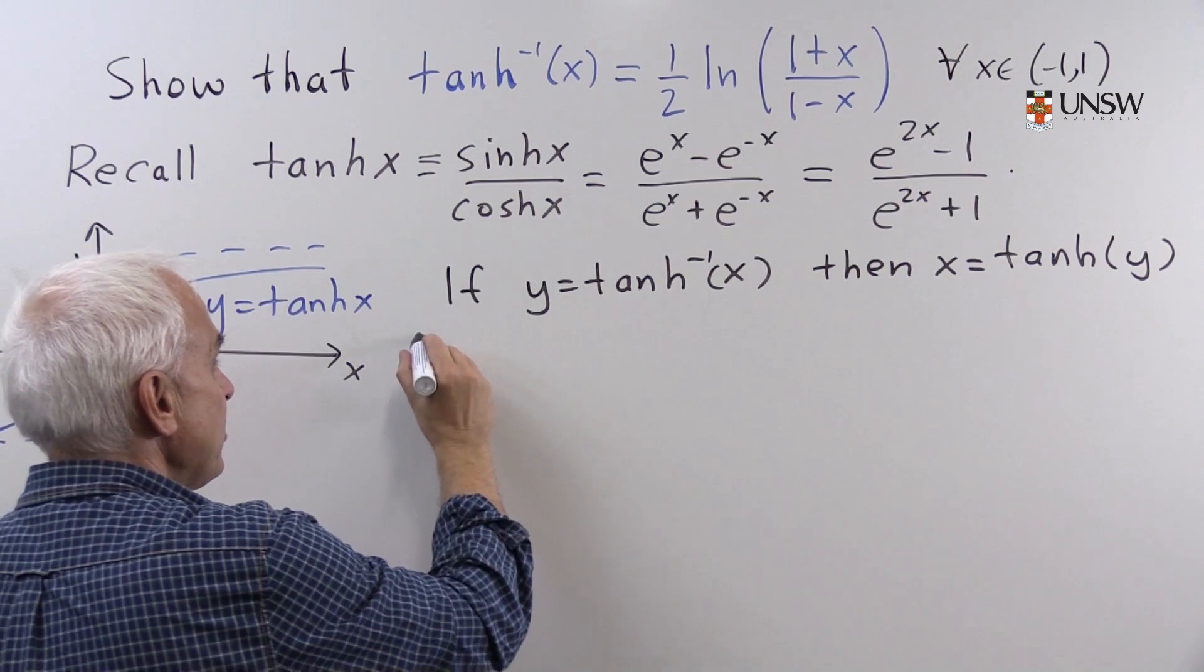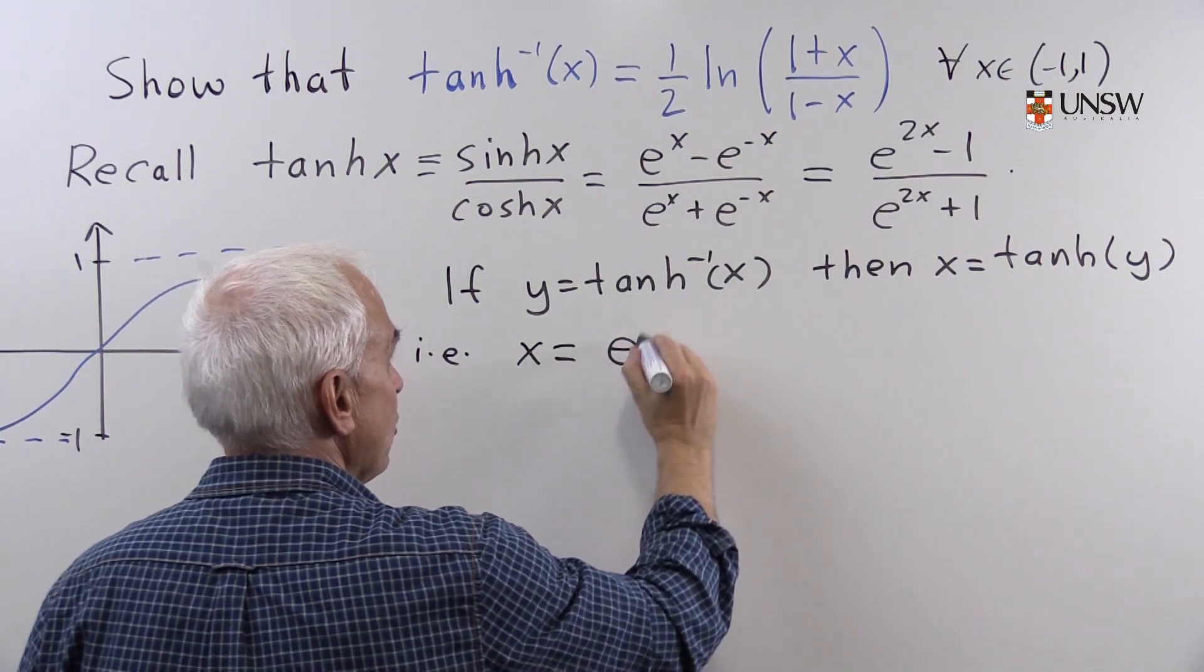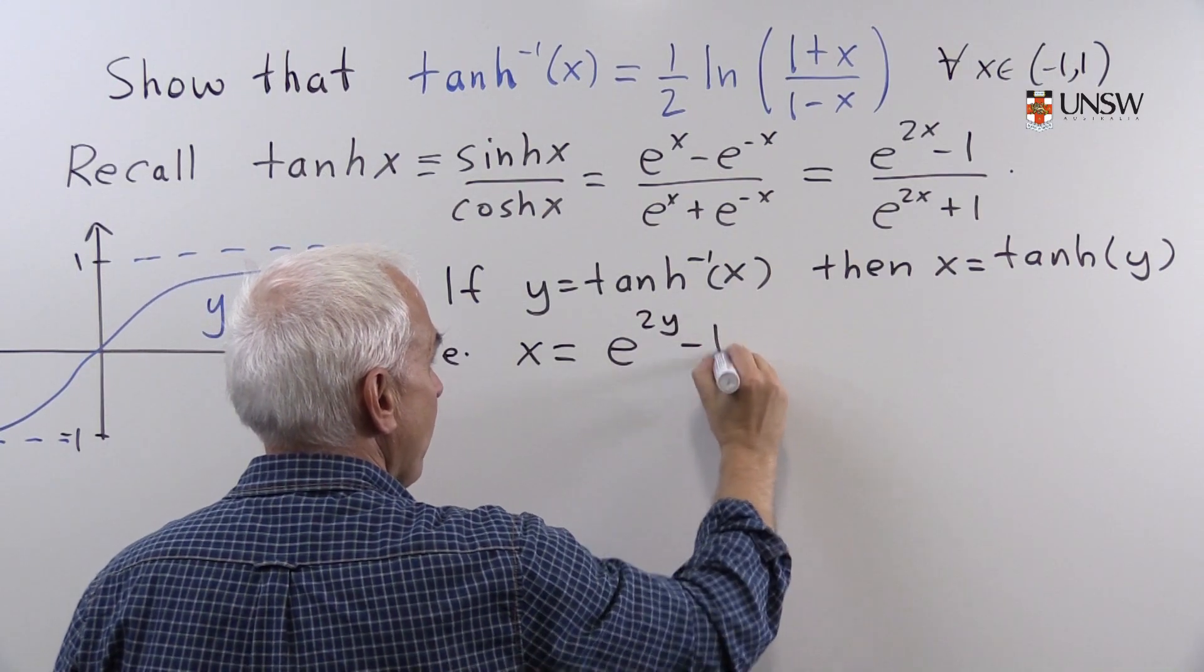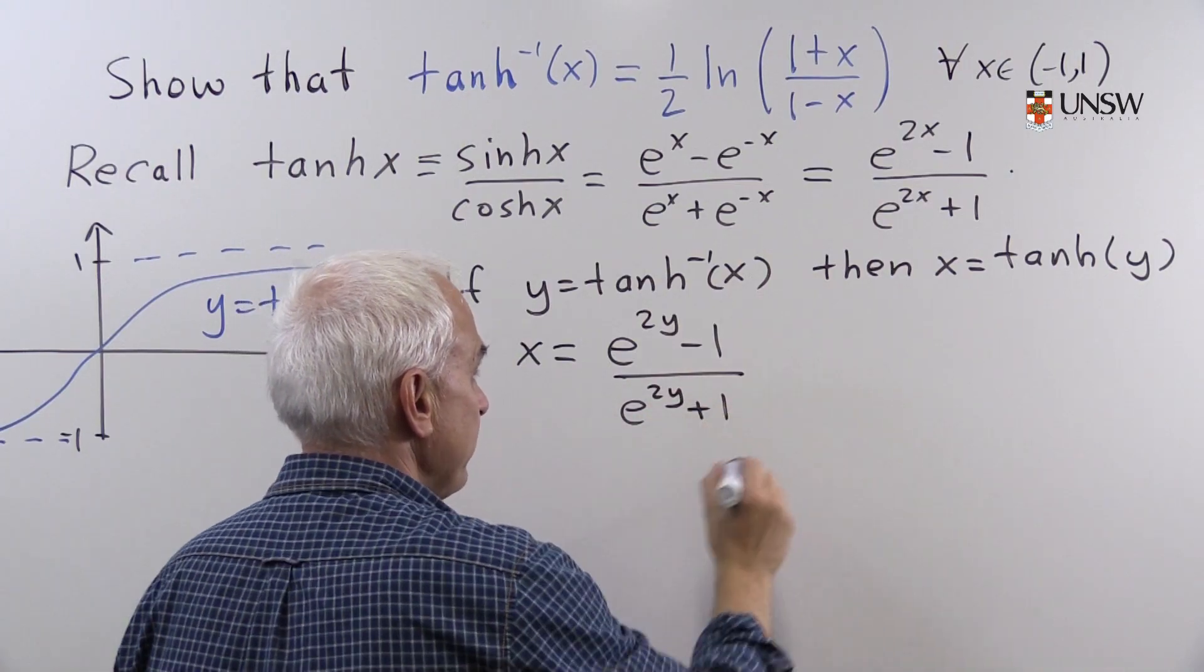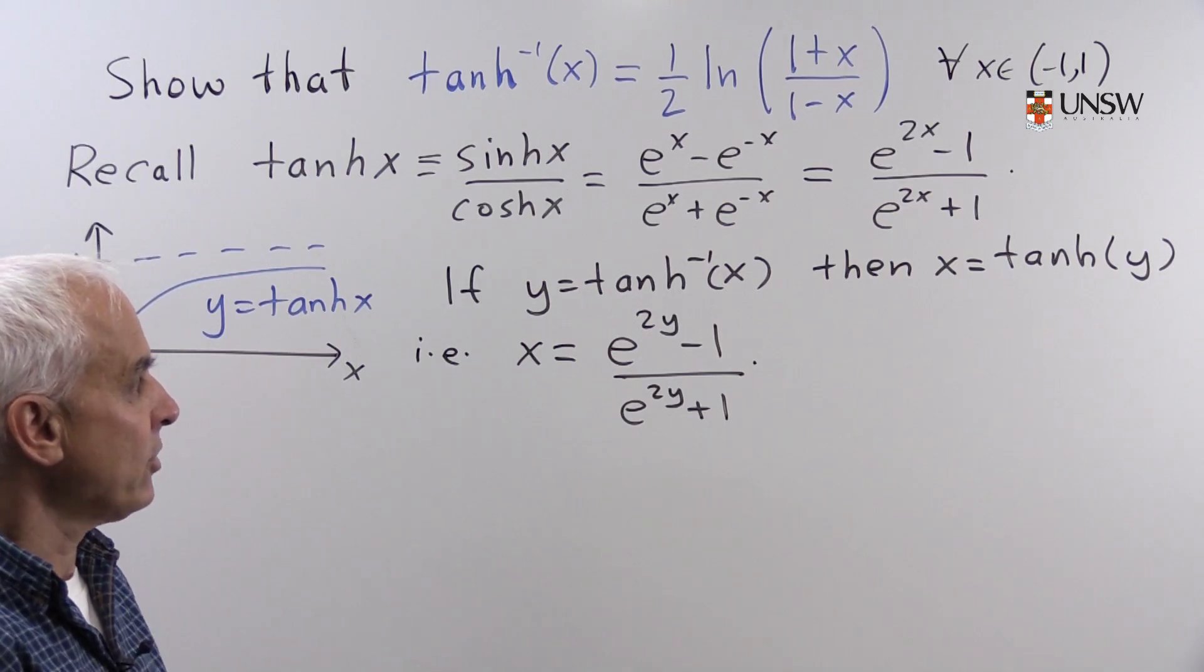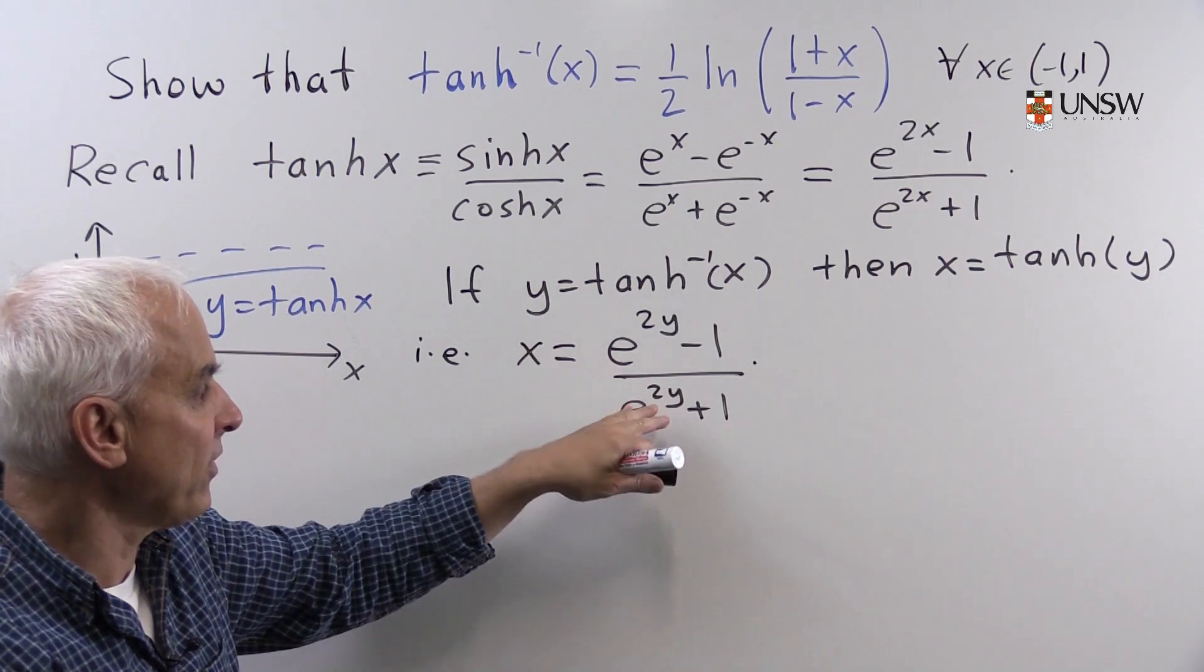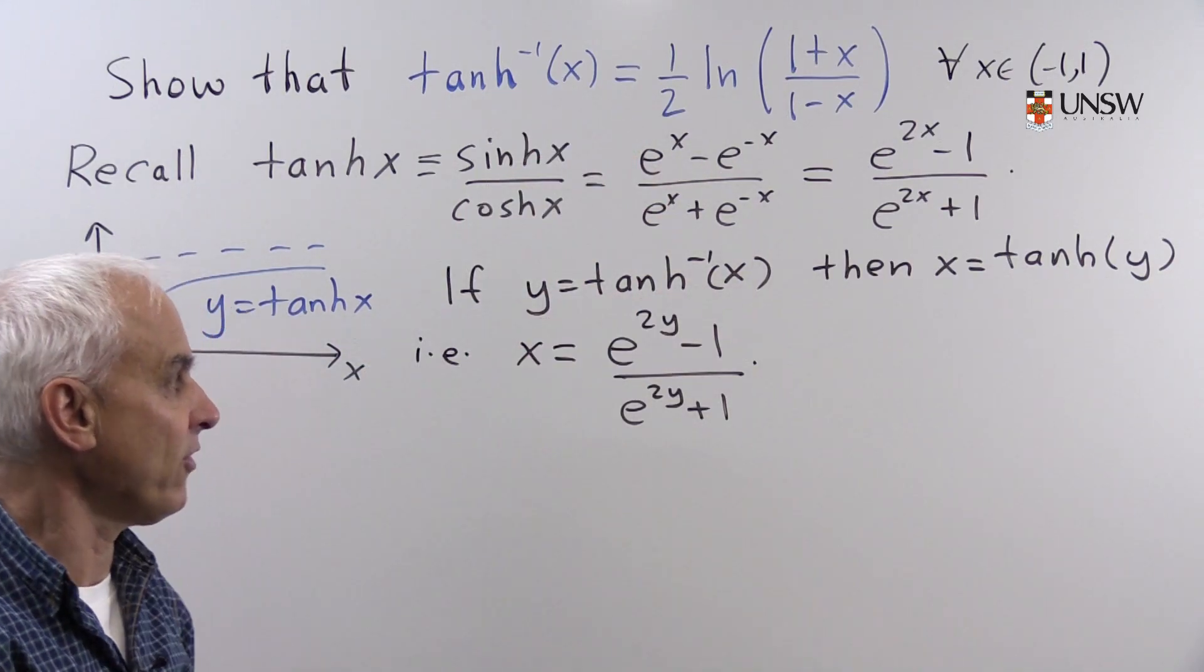In other words, that x equals e to the 2y minus 1 over e to the 2y plus 1. So our job now is to solve this for y to get an alternate expression for tanh inverse of x.